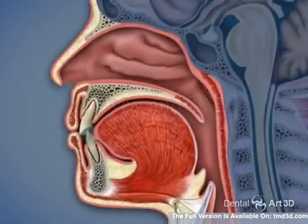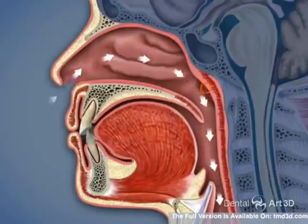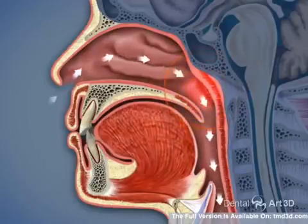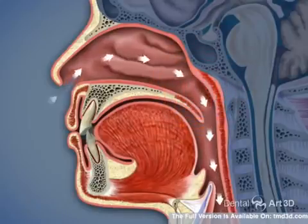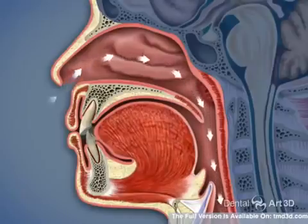Airway and TMJ. The normal way to breathe is through your nose. As we grow and develop, certain things such as pollen, cow milk, and other variables can cause an allergic reaction, causing the lymphoid tissues, known as tonsils and adenoids, to become swollen.